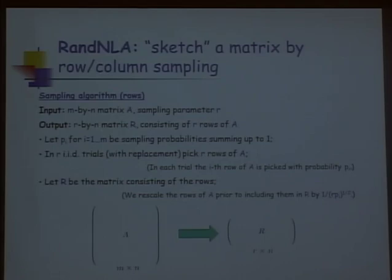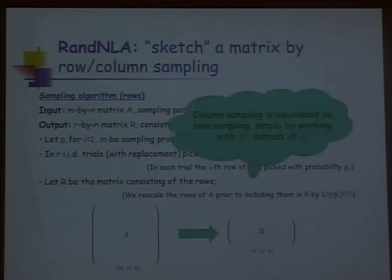What I'm not revealing just yet is what the appropriate sampling probabilities are — that we'll discuss throughout the talk. Column sampling would be the same, except instead of working on matrix A, you work on A transpose. Sampling rows of A transpose means sampling columns of A. Row and column sampling can both be treated within this very simple framework.